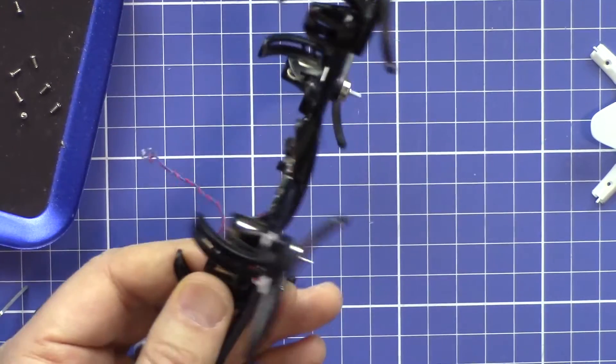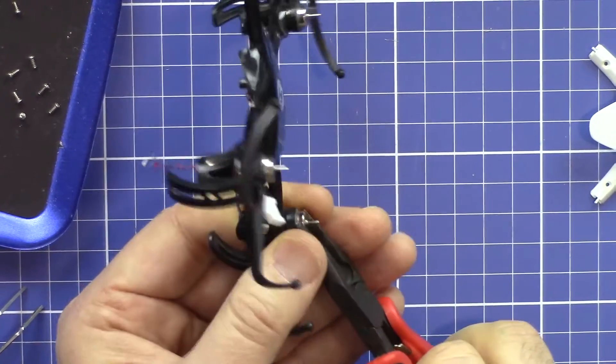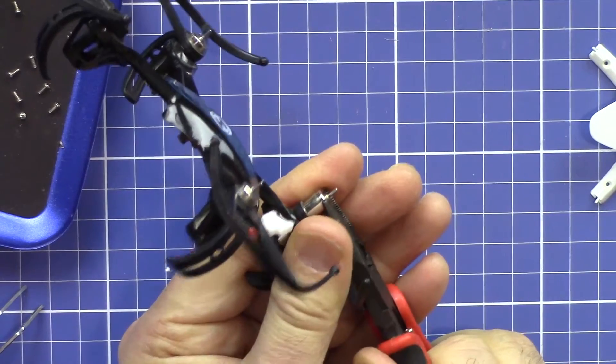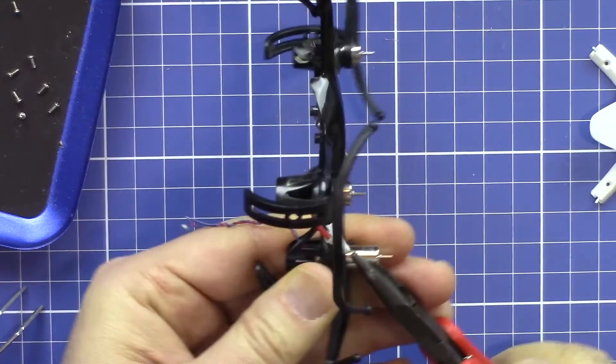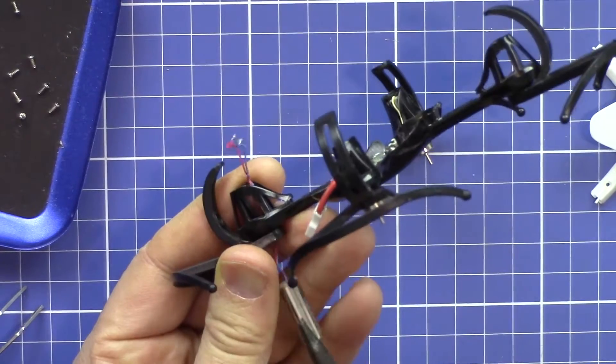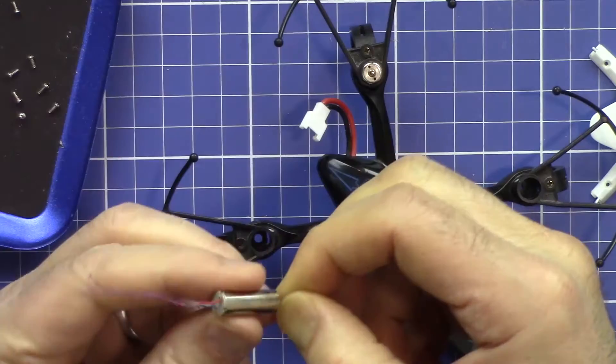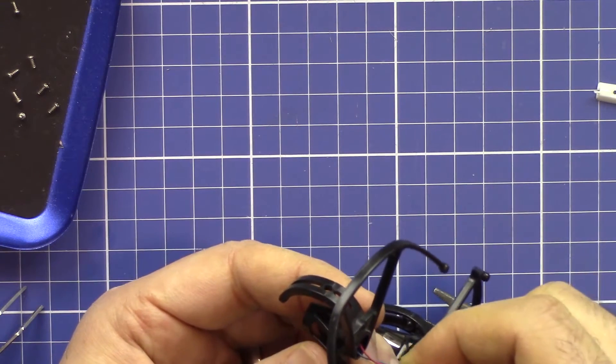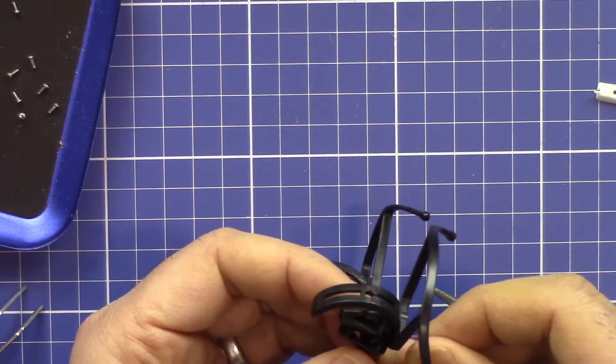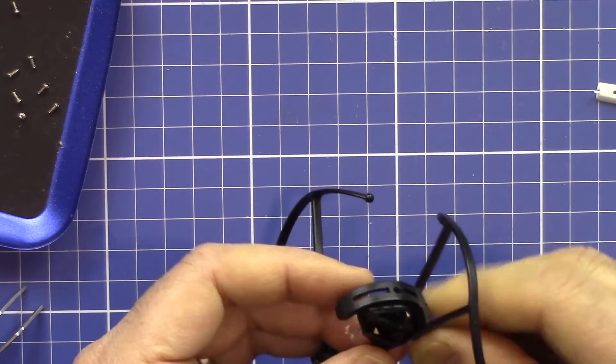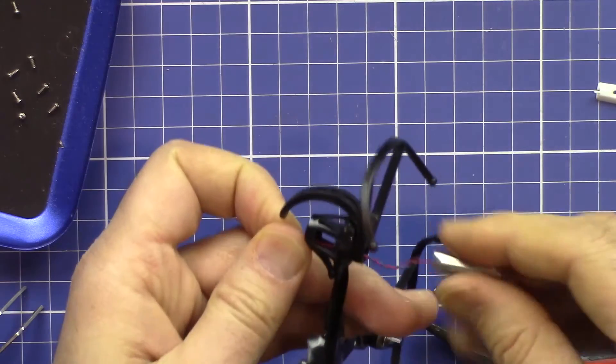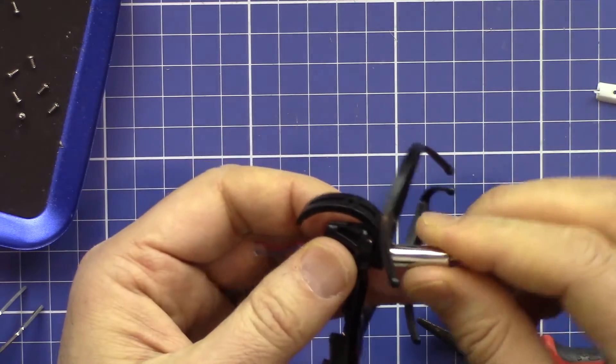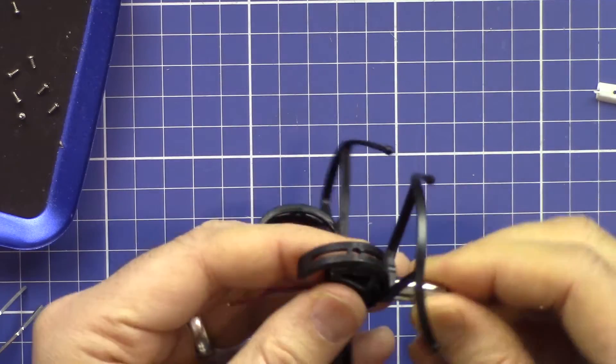Bring it out. Bring it with the pliers. So this is a brushed motor. So when the wires pass, then you can force the motor. I'll push it until it clicks.